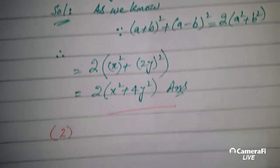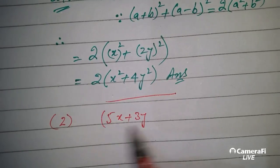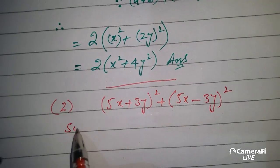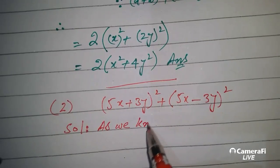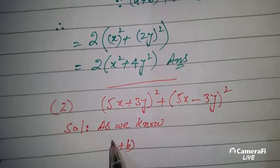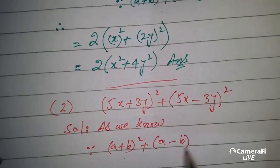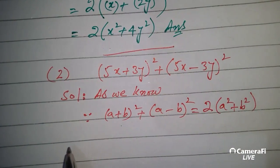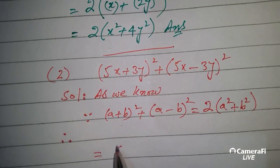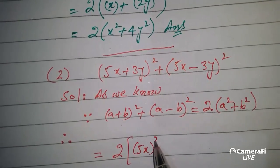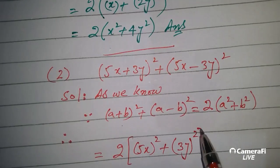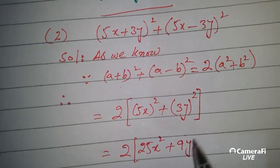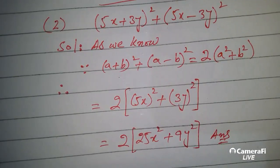Question number 2 is (5x+3y)² + (5x-3y)². Again, (a+b)² + (a-b)² equals 2(a²+b²). Therefore the present question can be written as 2 times (a²+b²) form, and this is the answer.